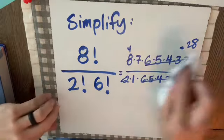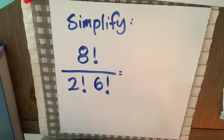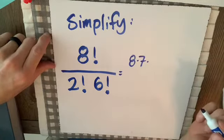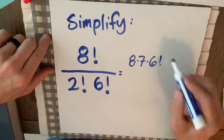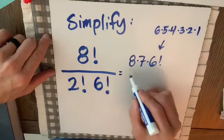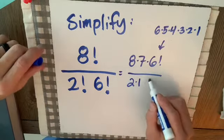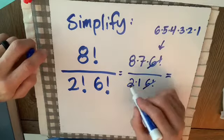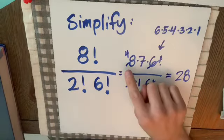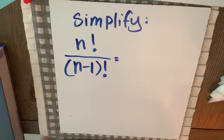However, I'd rather not work that hard. Notice that 8 factorial can be written as 8 times 7 times 6 factorial, since 6 factorial is 6 times 5 times 4 times 3 times 2 times 1. So I write 8 factorial over 2 times 1 times 6 factorial. The 6 factorials cancel, and 2 goes into 8 four times — again giving 28. Writing 8 factorial as 8 times 7 times 6 factorial saves effort.